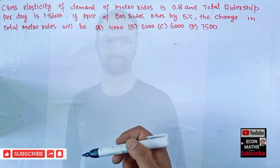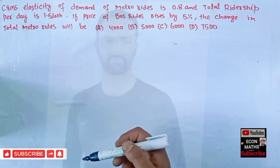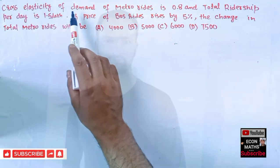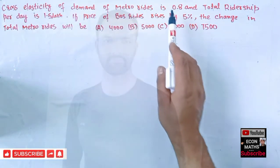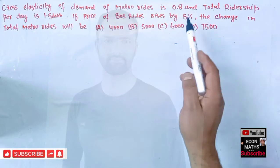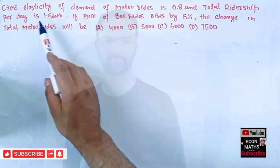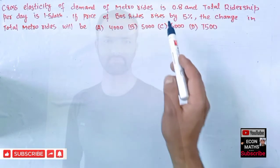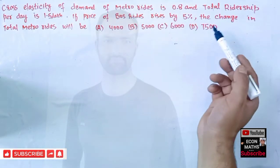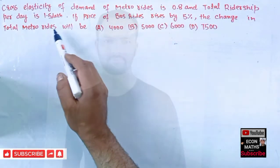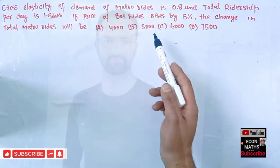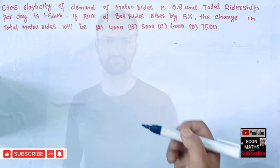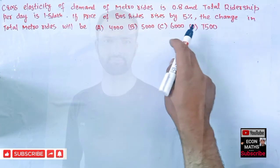Hi, this is Halal. In this video we will try to solve your problem on cross elasticity of demand. The question is: cross elasticity of demand of metro riders is given as 0.8 and total ridership per day is 1.5 lakh. If the price of bus riders rises by 5%, the change in total metro riders will be — options are 4000, 5000, 6000, or 7500.